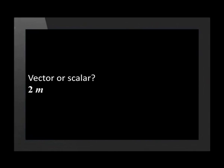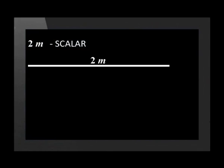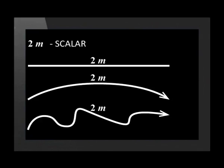Now let's look at a few examples and decide whether quantities are vector or scalar. First: is 2 meters a vector or a scalar? This measurement has a magnitude of 2 meters but no direction, so it is a scalar quantity. Interestingly, distance values with no direction can measure a straight line, a curve, or a path that changes direction.